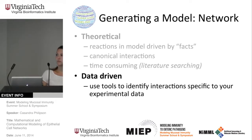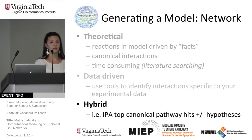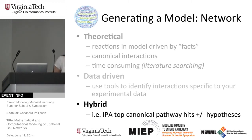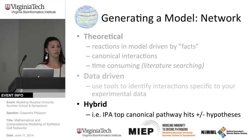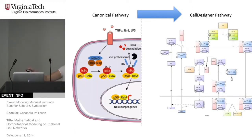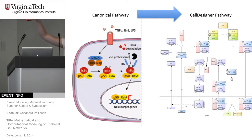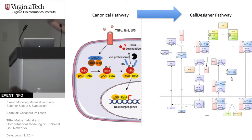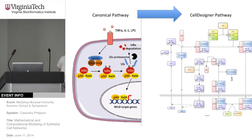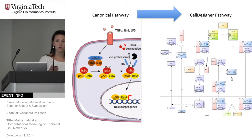What we do in the lab is more of a hybrid between these two. We use our data, plug it into IPA — which you'll have hands-on training with this afternoon — and get some top pathway hits. We can then add or subtract hypotheses and hypothetical reactions within those models. This gives you canonical pathways with some weight behind them. From here, we can import into COPASI, as I hope all of you know.